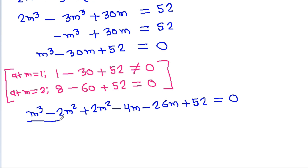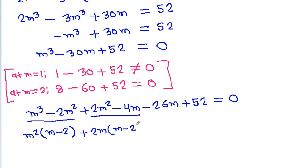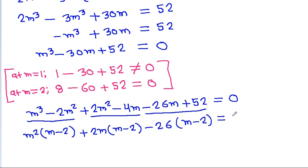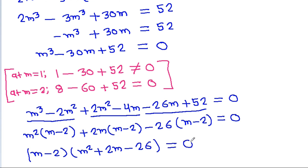Grouping: m²(m - 2) + 2m(m - 2) - 26(m - 2) = 0, so (m - 2)(m² + 2m - 26) = 0.